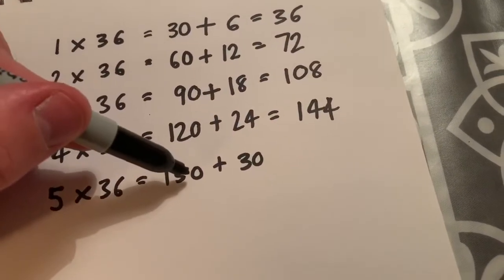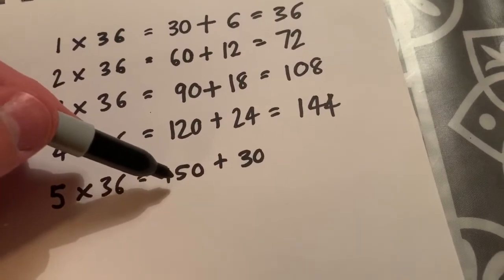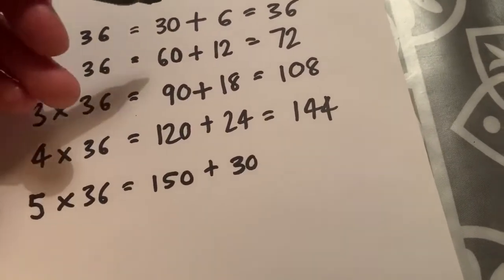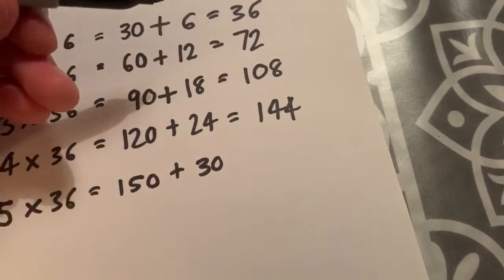Again here, I'm using my 3 times tables knowledge: 3, 6, 9, 12, 15. But I'm adding the 0 because it's actually the 30 times table, not the 3 times table. And 30 is of course 10 times bigger than 3. 6, 12, 18, 24, 30. That's my 6 times table knowledge.